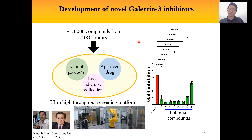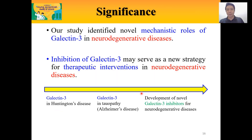We are also in progress to develop novel galectin-3 inhibitors. By using an ultra-high throughput screening platform, we have screened about 24,000 compounds and identified a few compounds that show effective galectin-3 inhibition. The significance of our study is that we have identified a novel mechanistic role of galectin-3 in neurodegenerative disease and showed that galectin-3 inhibition can serve as a new strategy for therapeutic interventions.